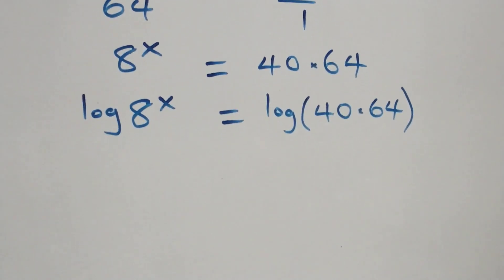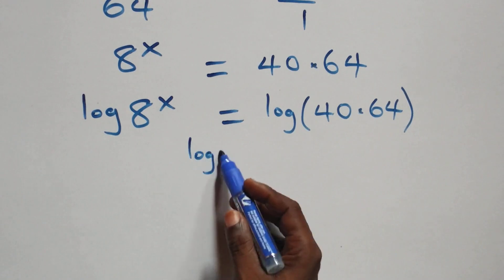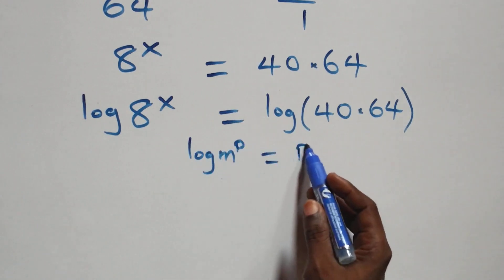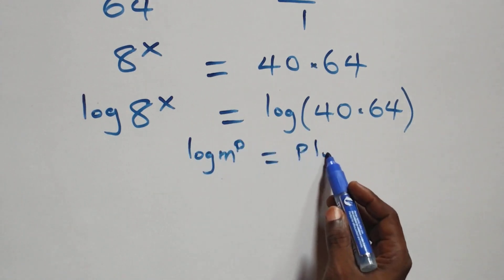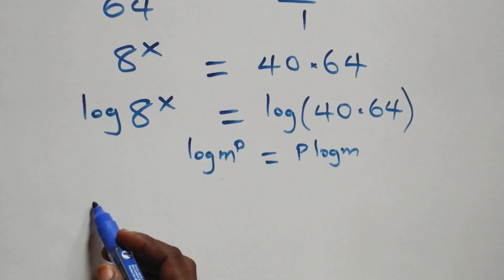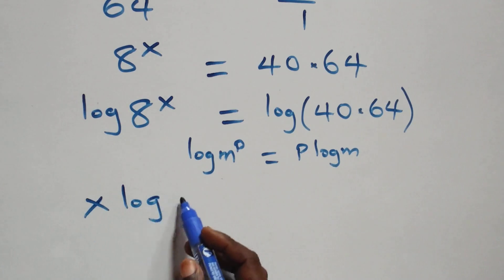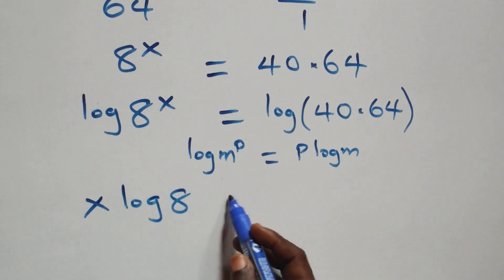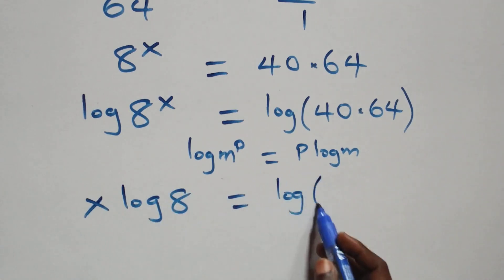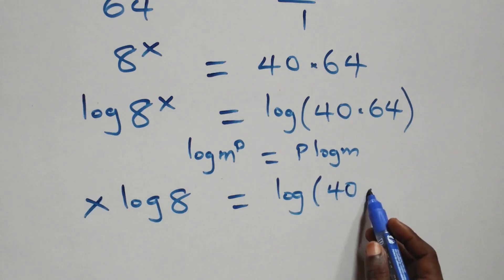We apply the power rule of logarithms: log m raised to power p is the same thing as p times log m. So all we have becomes x times log 8 equals log of 40 times 64.